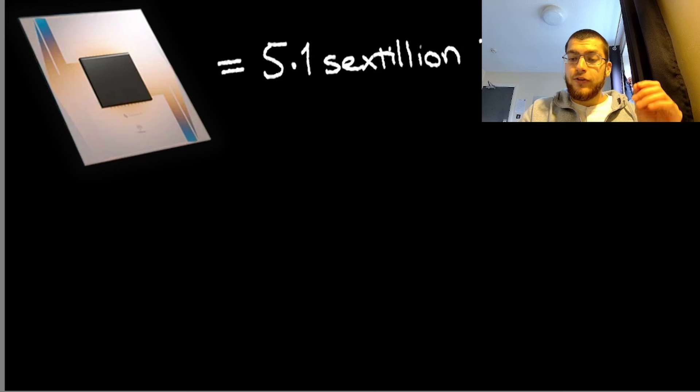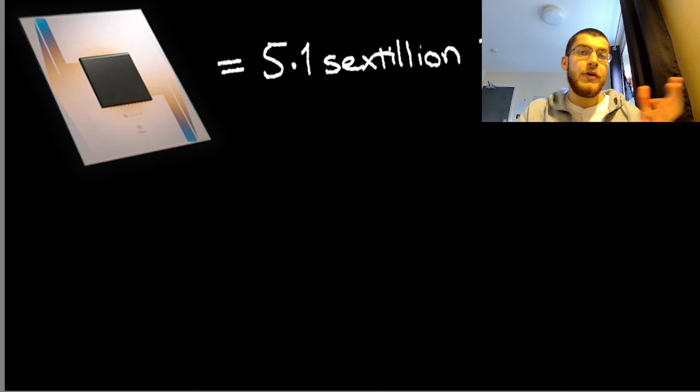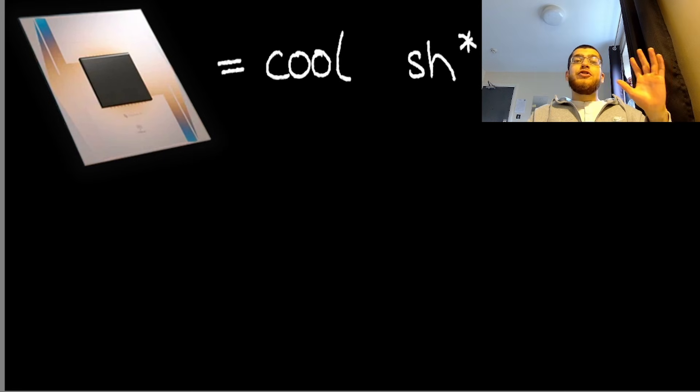Now this doesn't mean that we can store 5.1 sextillion terabytes in this single chip, because as soon as the qubits are measured, they revert back to a zero or a one. But this does mean that we can perform operations on vast amounts of data using just 105 qubits, because these qubits exist in a state of superposition.